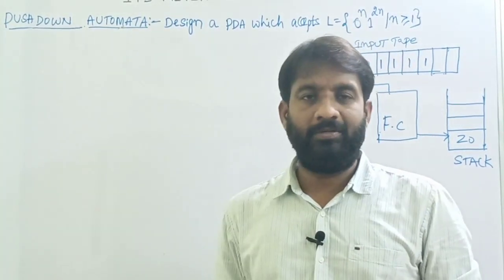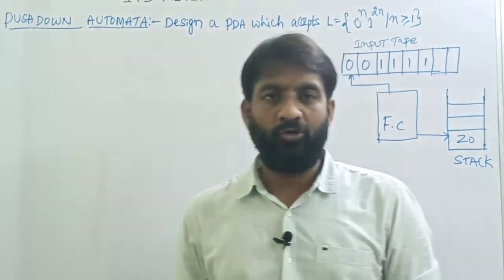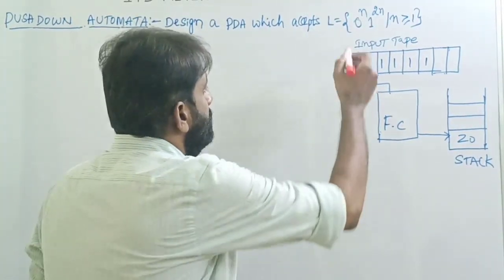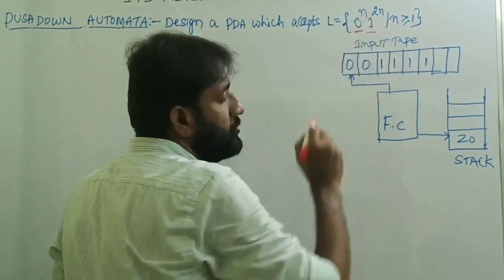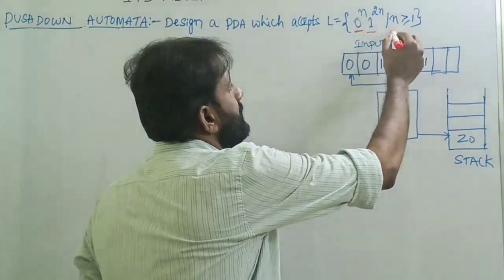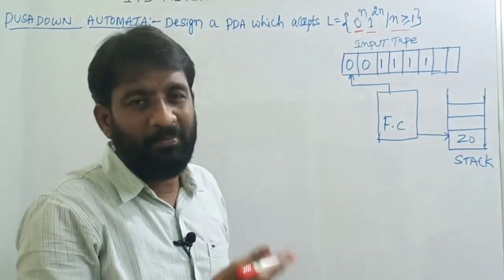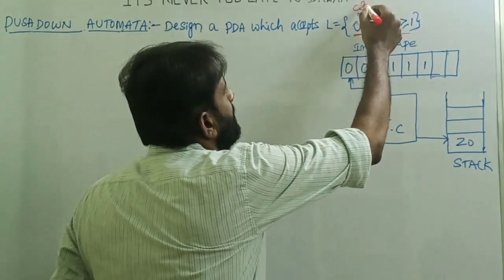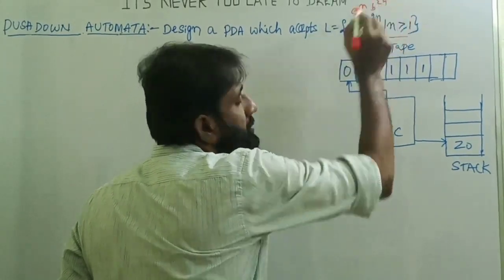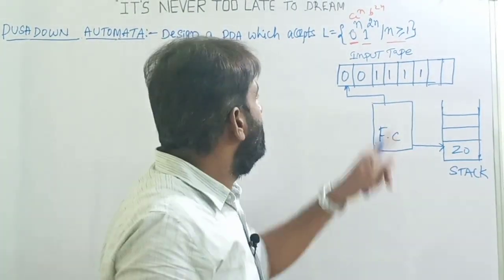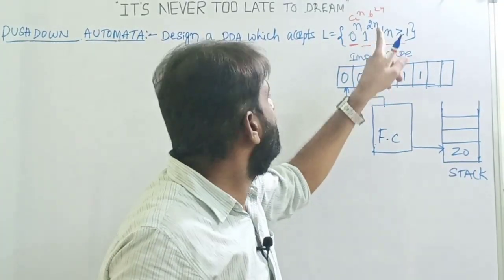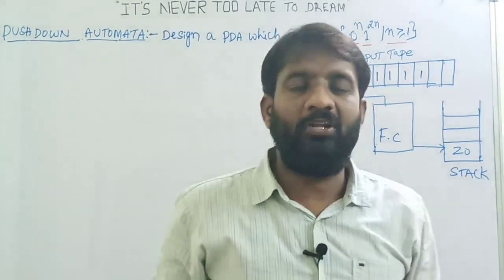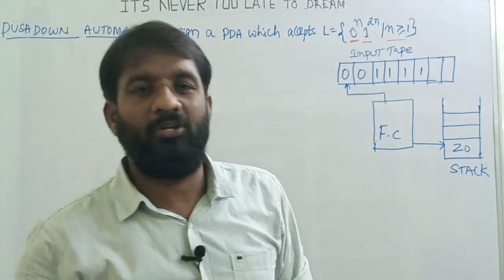Welcome back. Today's topic is: design a pushdown automata for the language L = 0^n 1^(2n) such that n is greater than or equal to 1. The same problem can also be asked as A^n B^(2n). The input symbols are 0 and 1, or alternatively A and B. First, let's discuss the logic of how to design the pushdown automata.